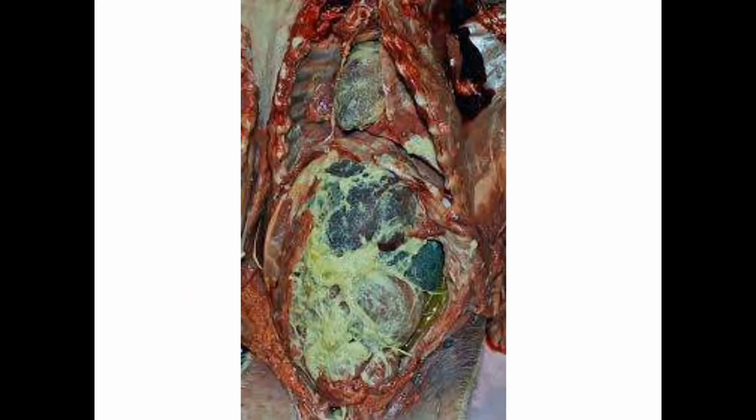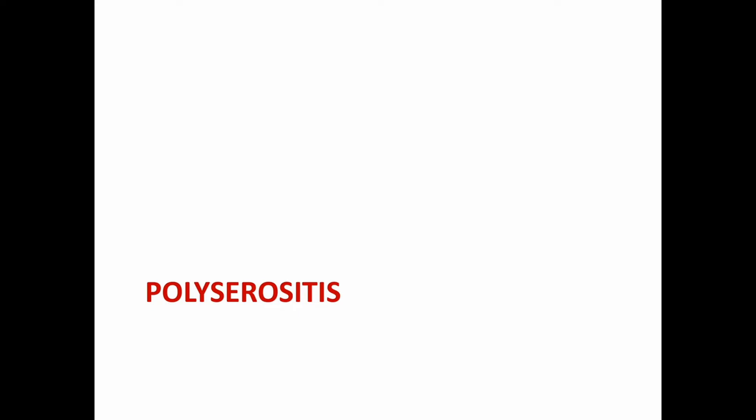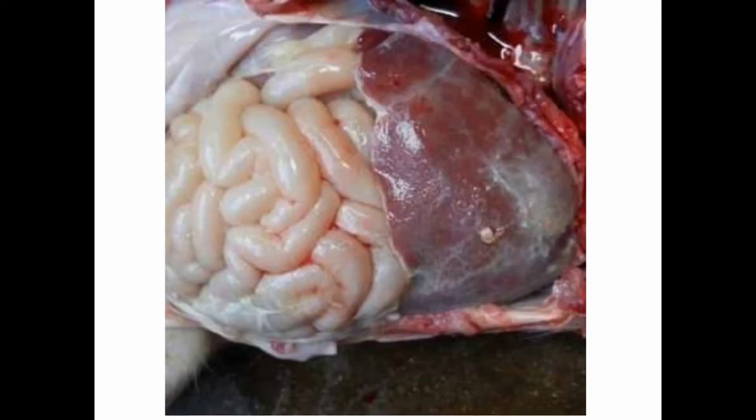First is fibrinopurulent peritonitis. This picture shows fibrinopurulent peritonitis — you can see the thickened part covering the organs of the abdominal cavity. The next is polycyrositis, that is inflammation of serous membranes all over the body. This picture shows polycyrositis.